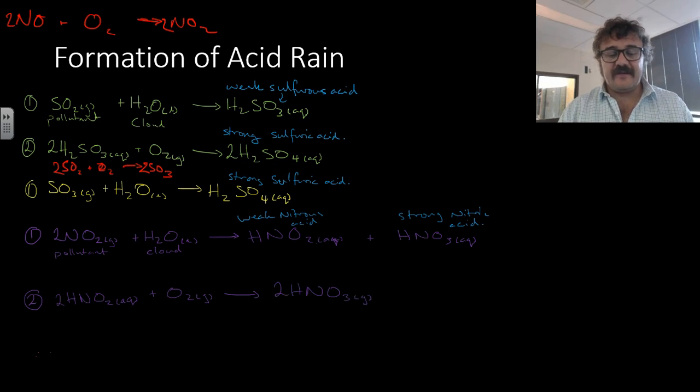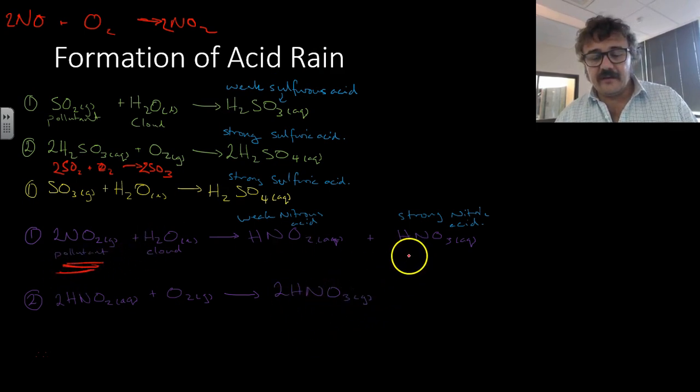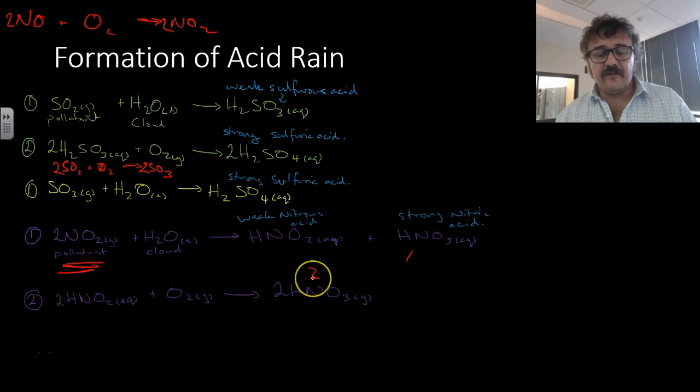However, there is a second step. The weak nitrous acid will also react with oxygen and will give you even more strong nitric acid. So what you'll see if we add this up from this reactant here, we'll end up with three—there's one, there's two—nitric acids, and that's a problem.